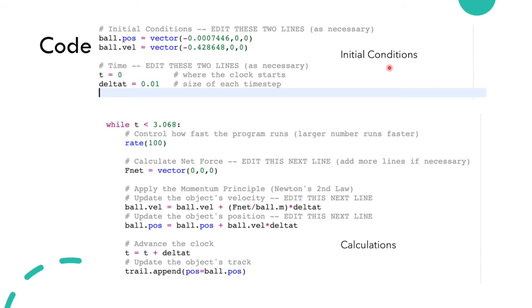So those are our initial conditions. Then for the calculations, we simply did an adaptation of Newton's second law. As you can see here, F net equals zero, and while t is less than 3.068, which is the last frame, we just repeat with a delta t of 0.01 these calculations.